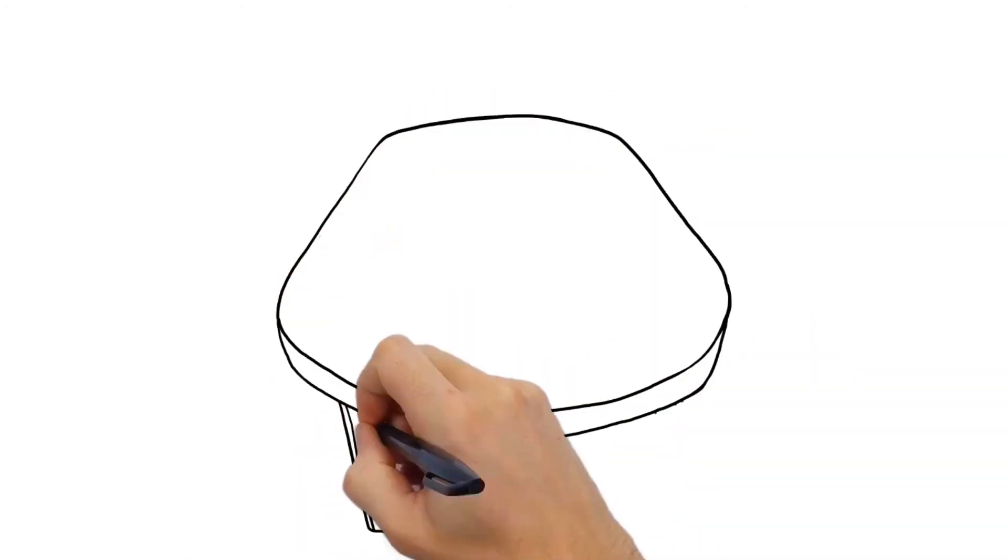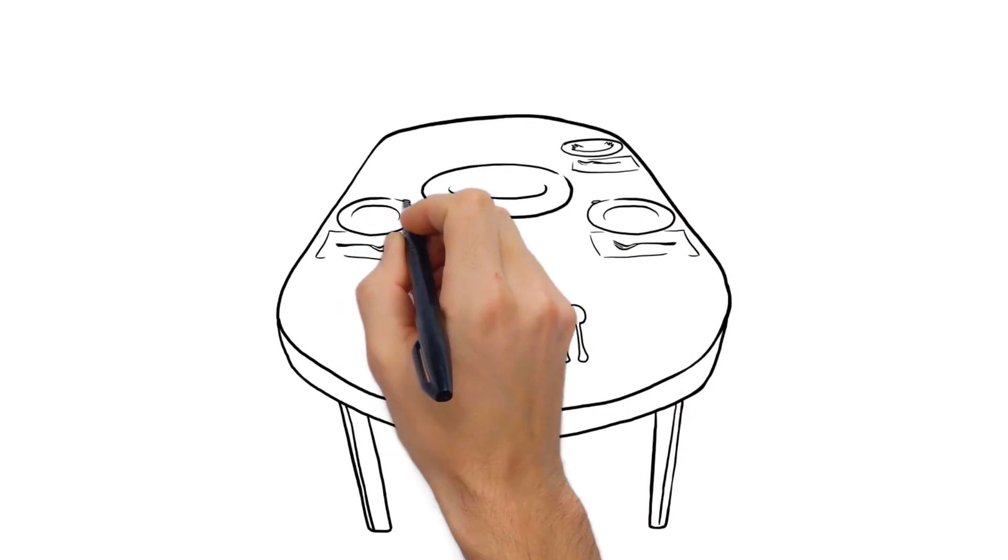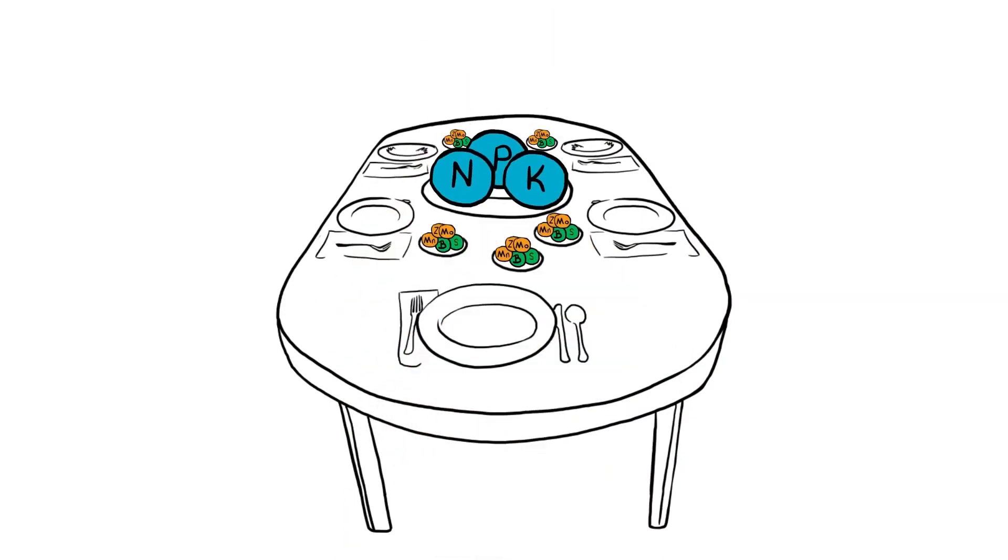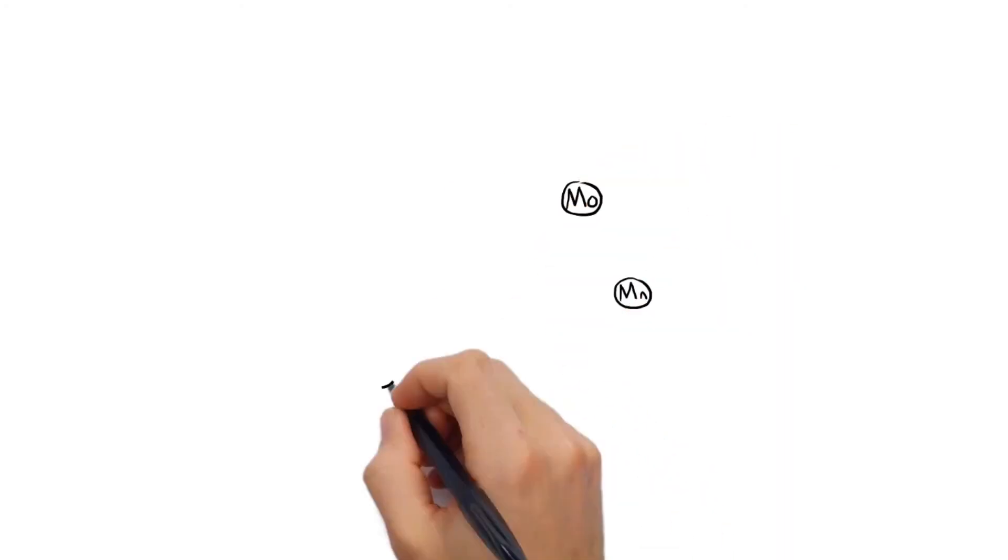While micronutrients are essential for plants to thrive in periods of normal growth, they are required in much smaller amounts than nitrogen, phosphorus, and potassium. In a stressful situation, their role changes.